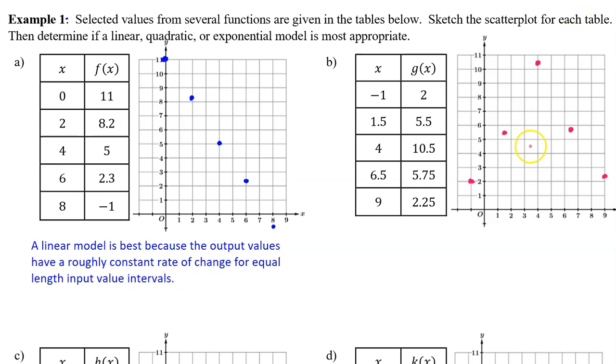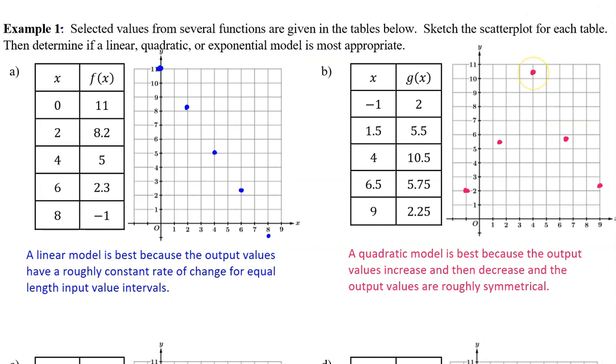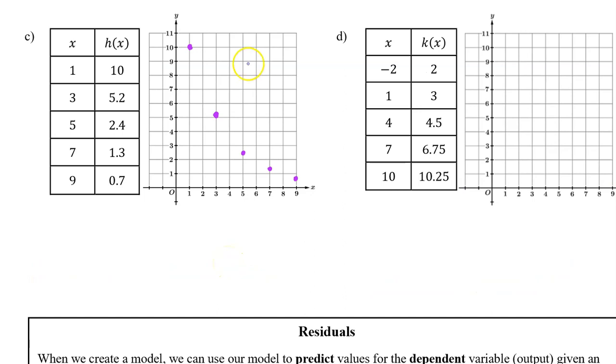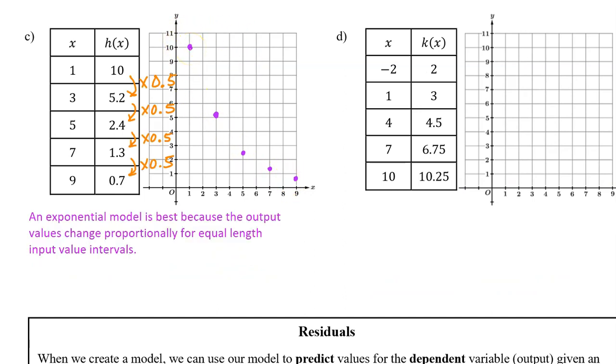Here's the scatter plot for part B. You can say a quadratic model is best because the output values increase and then decrease, and the output values are roughly symmetrical. Here's the scatter plot for part C. You would say that an exponential model is best because the output values change proportionally for equal length input value intervals.